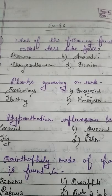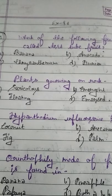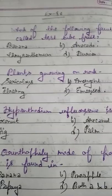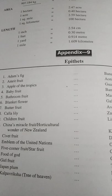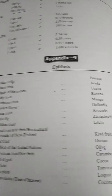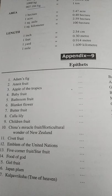Student, question number 1. Which of the following fruit is known as test stew fruit? Some important epithets you have to know: Adam's fig is banana, Amrit fruit is Aonla, Apple of Tropics is Guava, Kalpavraksh is coconut, Girl fruit is tamarind.